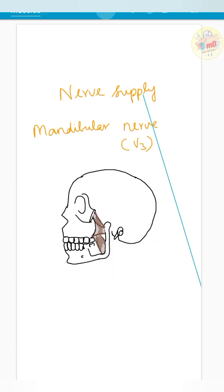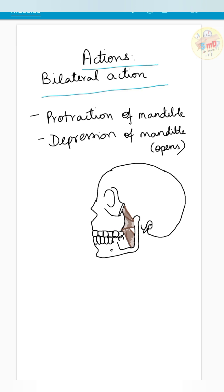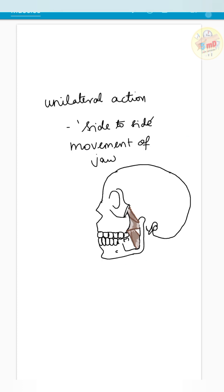Nerve supply is the mandibular nerve, and blood supply is from the pterygoid branch of the maxillary artery. With bilateral action — when both muscles work together — it causes protraction and depression of the mandible, that is, opening of the mouth. This is the only muscle among the muscles of mastication which causes depression of the mandible.